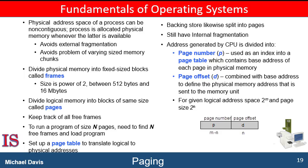Another possible solution to the external fragmentation problem is to permit the logical address space of processes to be non-contiguous. This would allow a process to be allocated physical memory wherever such memory is available. This is the strategy used in paging, the most common memory management technique found in computer systems. Fragmentation is a general problem in computing that can occur wherever we must manage blocks of data.